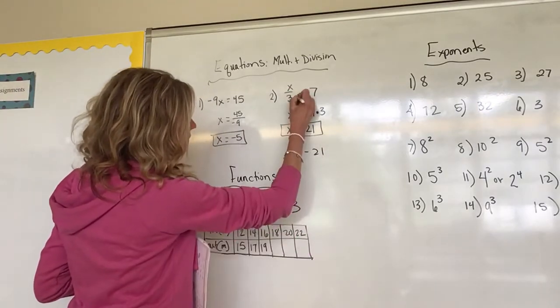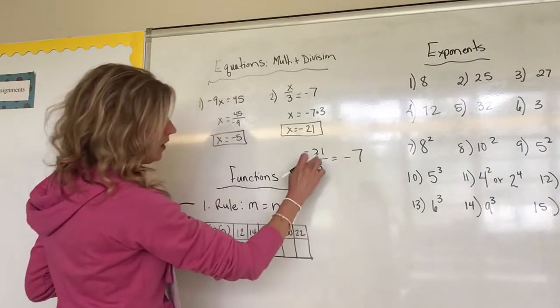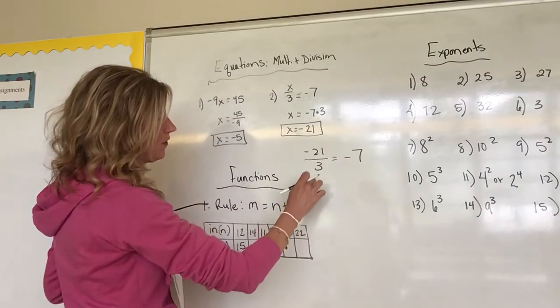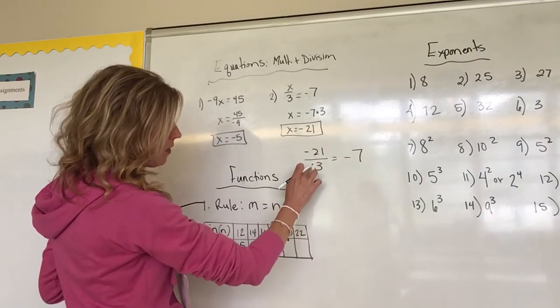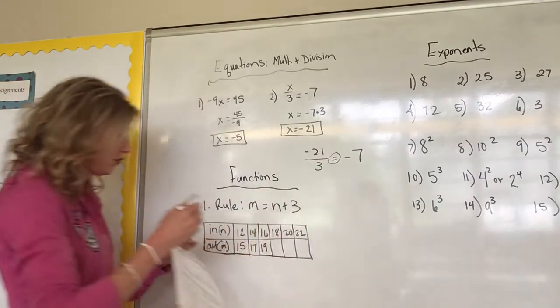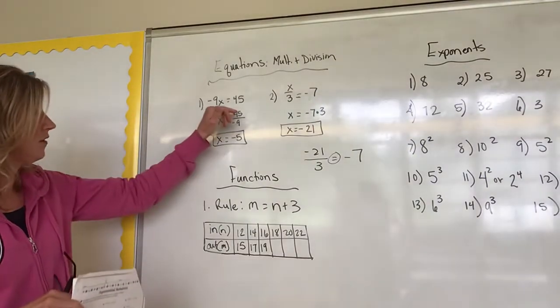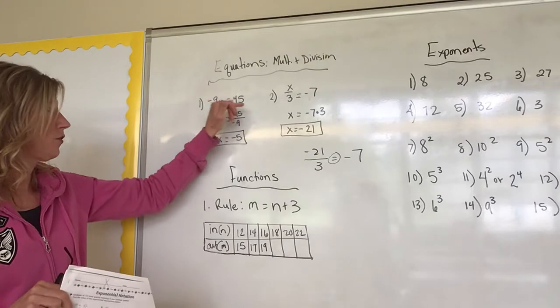Well if we were to put it back up there, is that correct? If I was to put negative 21 in for x and divide it by 3, would that equal negative 7? Well yeah, 3 goes into 21 seven times, negative positive, that would be a negative 7. So yep, that's right.